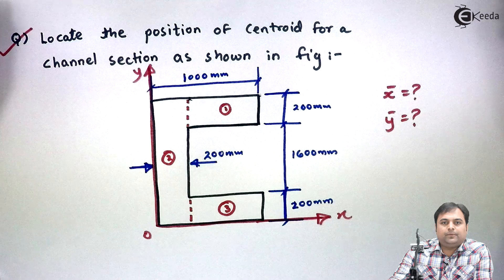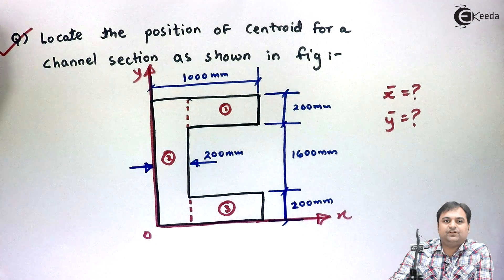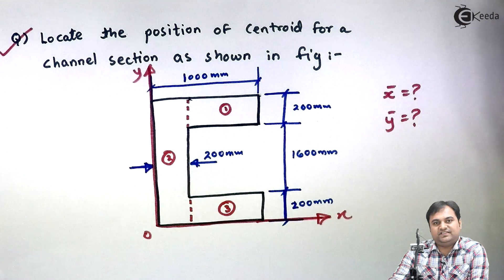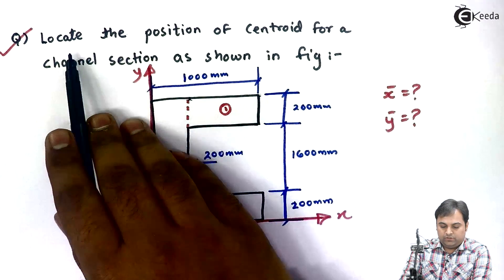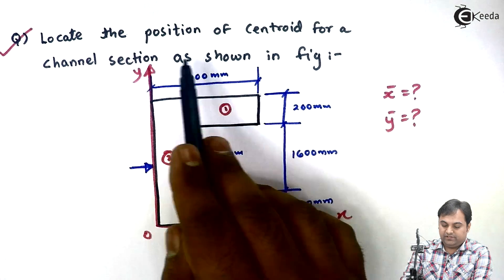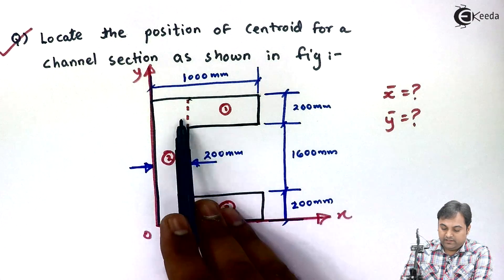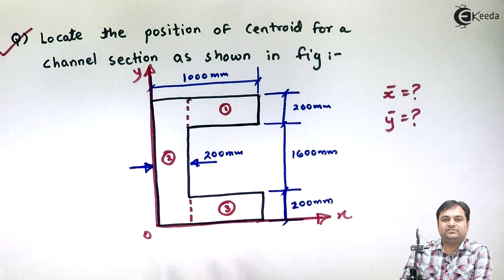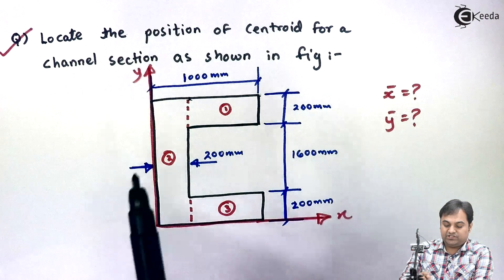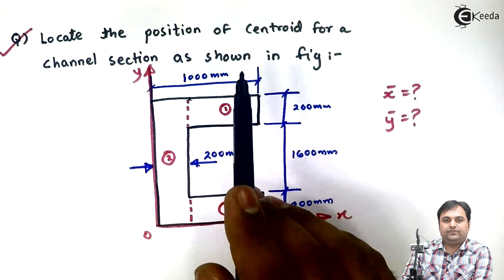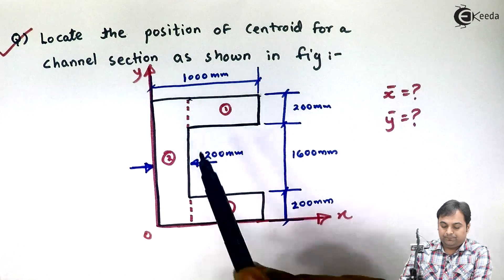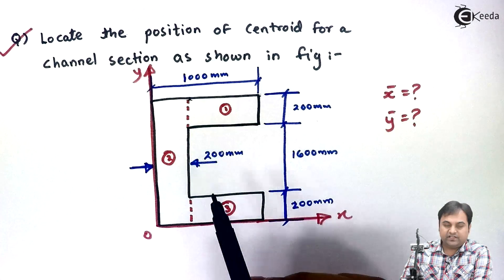Hello friends, now we will take the problem of centroid based on a C-section. In this video we would be locating the centroid for a C-section. The question is to locate the position of centroid for a channel section as shown in the figure. The dimensions of the channel section are given and we need to find the position of centroid, which means we need to calculate x bar and y bar.